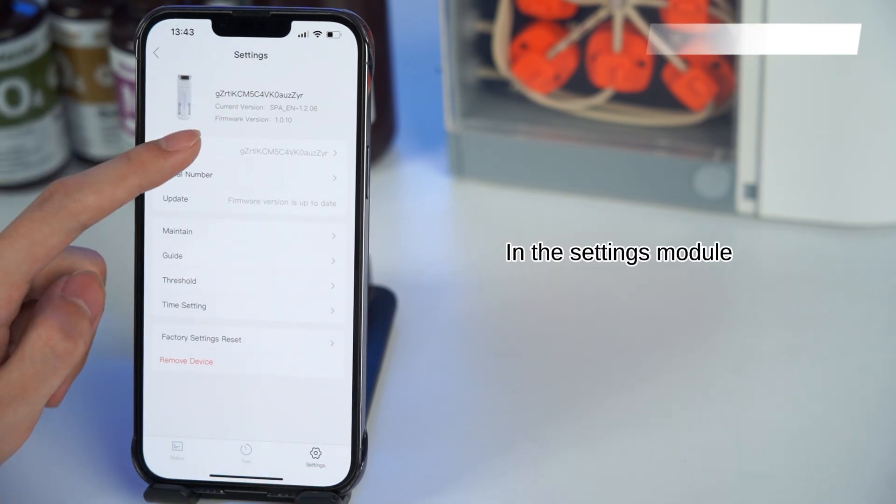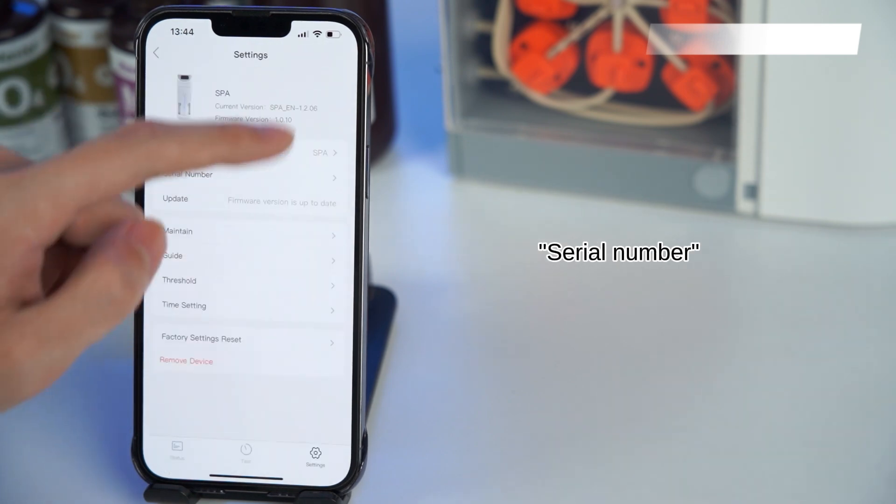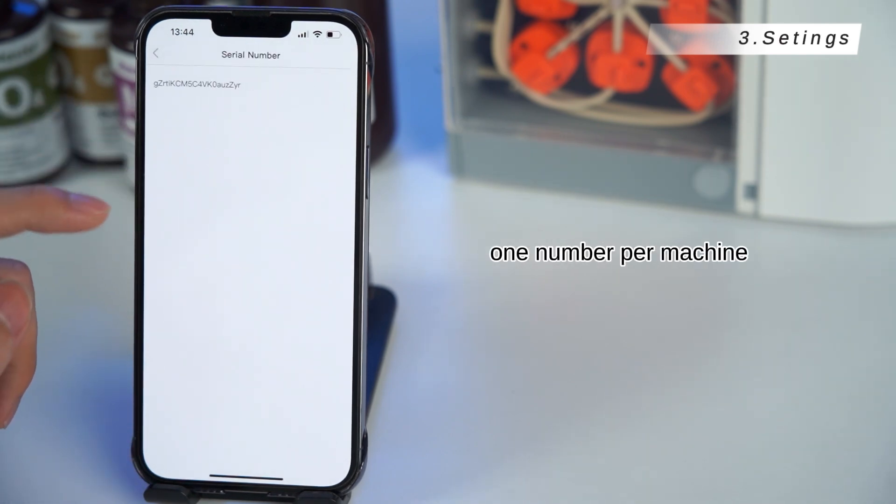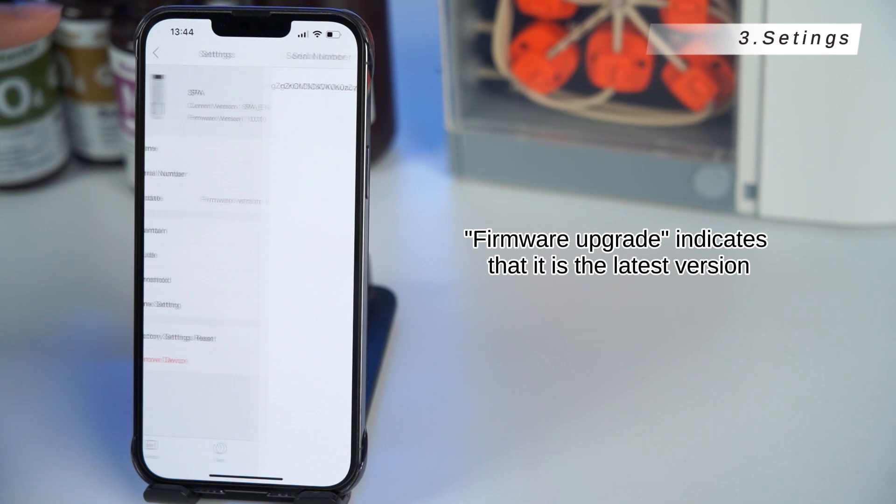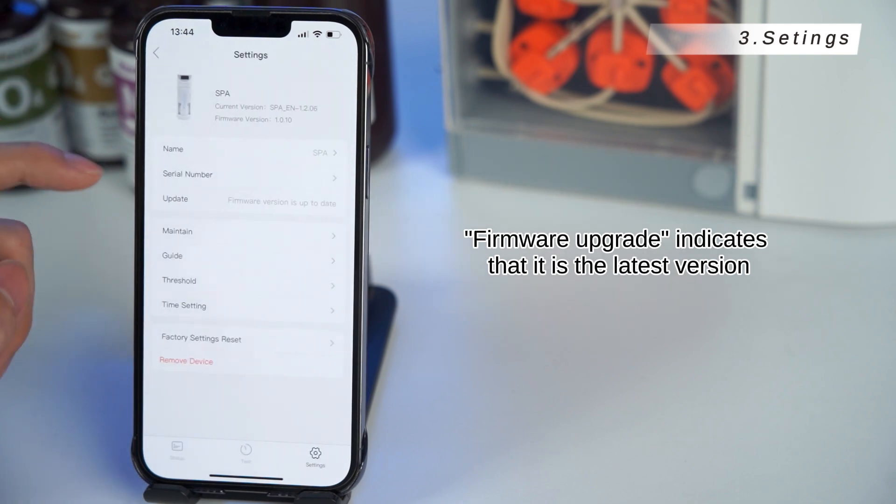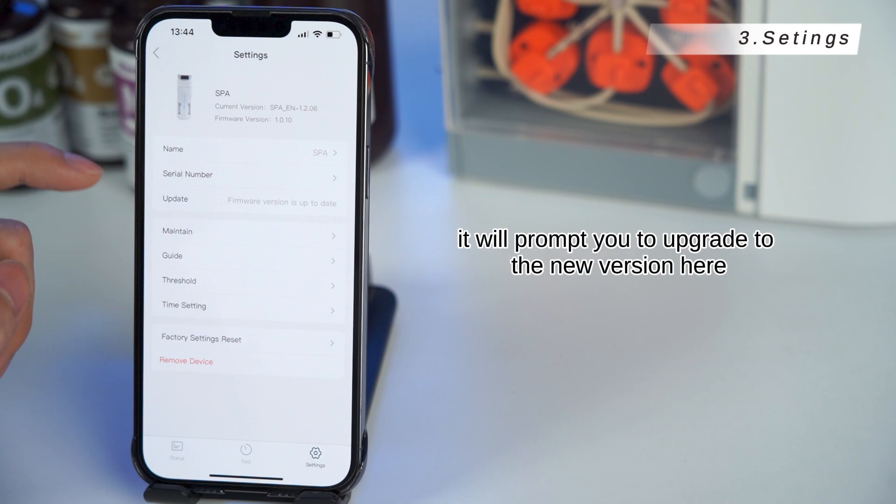Settings. In the settings module, name, depend on you. Serial number, one number per machine, cannot be modified. Firmware upgrade indicates that it is the latest version. If there is an upgrade later, it will prompt you to upgrade to the new version here.